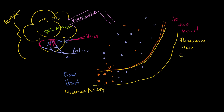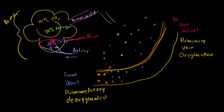The pulmonary vein carries oxygenated blood; the pulmonary artery carries deoxygenated blood. This is special because it's the opposite of the rest of the body: in the systemic circulation, arteries going away from the heart carry oxygenated blood, while veins going toward the heart carry deoxygenated blood. The lungs are what take up the carbon dioxide and give us the oxygen.